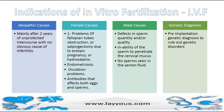Idiopathic causes of infertility: mainly after 2 years of unprotected intercourse with no obvious cause of infertility. Female causes: 1) problems with the fallopian tubes such as obstruction, or in cases of salpingectomy due to ectopic pregnancy, or hydrosalpinx; 2) endometriosis; 3) ovulation problems; 4) antibodies that affect both eggs and sperm.